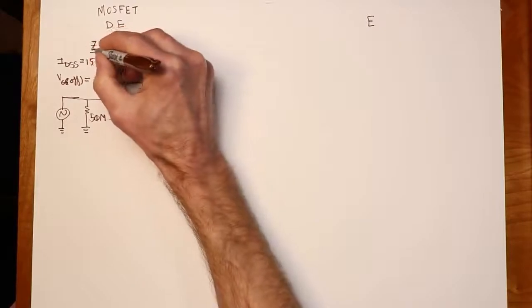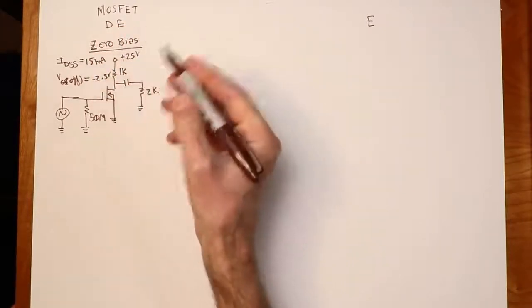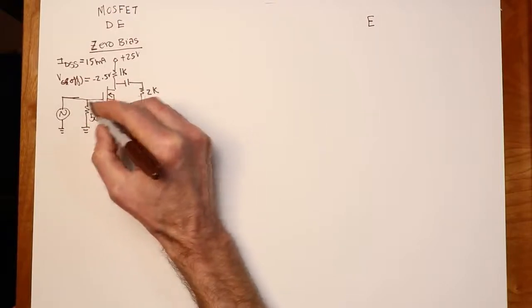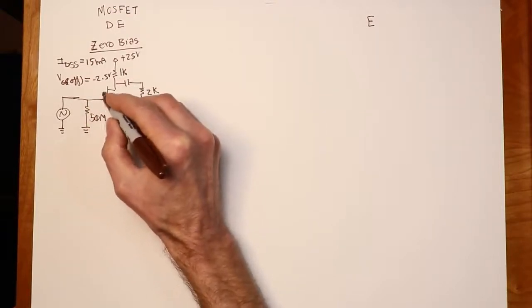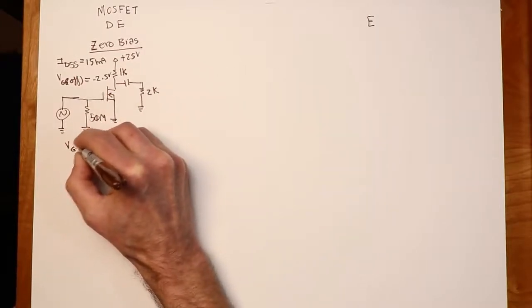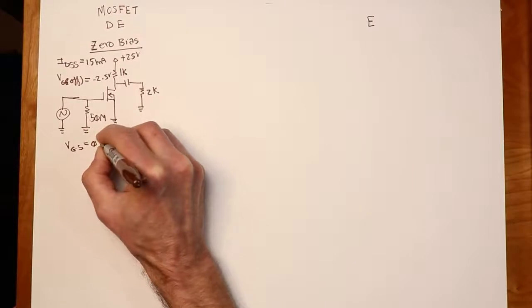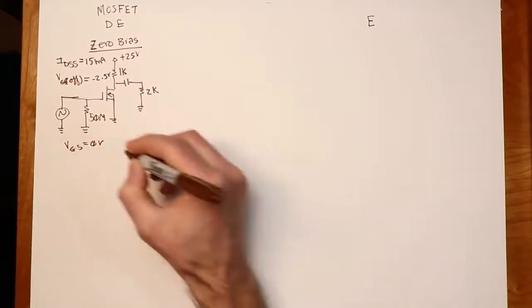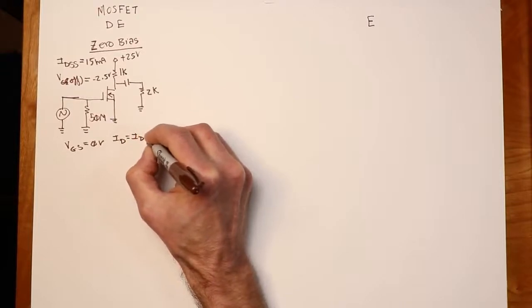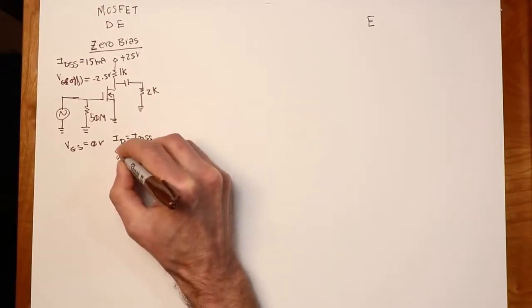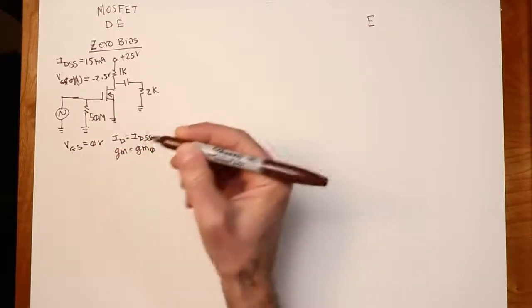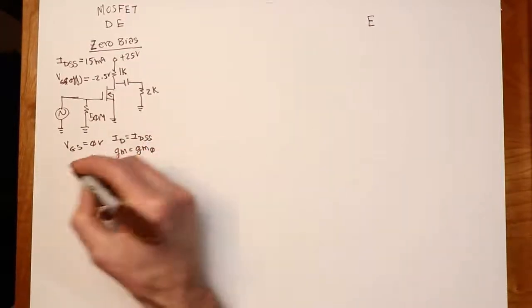All right. Because it's zero bias, we know it's zero bias. Source is at ground. There is no voltage applied, no DC voltage applied to the gate. So VGS here is zero. That's how we know it's zero bias. That's pretty much the definition of it. If that's the case, then ID must equal IDSS, because that's the definition, and GM must equal GM zero. Because those are defined at VGS equals zero.